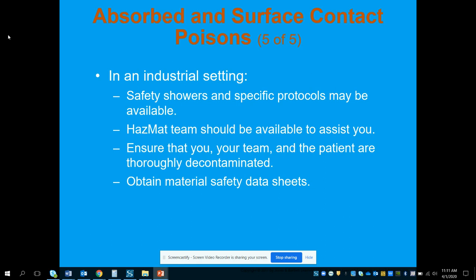The hazmat team can assist if needed. Ensure that you, your team, and the patient are thoroughly decontaminated before getting into the enclosed space of the ambulance. Obtain material safety data sheets (MSDS) from the chemicals — they are required to produce these so you can see what type of chemical it is, what it reacts to, and what will help deactivate it. That information can be very useful for the hospital as well. This ends part one of the video.